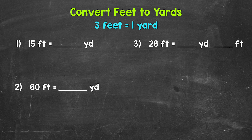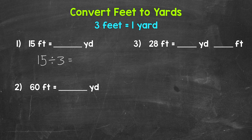Let's jump into our examples, starting with number one, where we have 15 feet equals how many yards? Think about it like this: each group of three feet equals a yard. So how many groups of three feet are in 15 feet? We need to divide. We have 15 divided by three, which gives us five. 15 feet equals five yards.